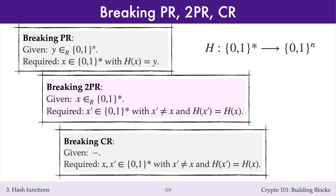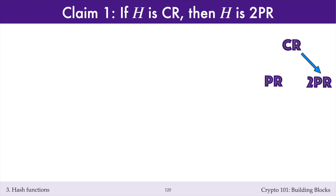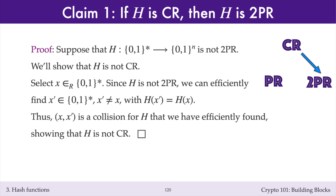In the remainder of the lecture, we'll establish relationships between the three security properties of a hash function. I'll first prove that collision resistance implies second pre-image resistance. To prove this, I'll establish the contrapositive statement: if h is not second pre-image resistant, then h is also not collision resistant.